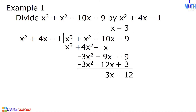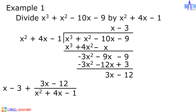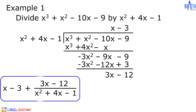Let us write the answer. The quotient is x minus 3, plus the remainder 3x minus 12 over the divisor, which is x squared plus 4x minus 1. And this is the answer.